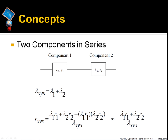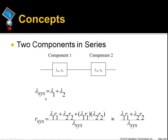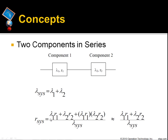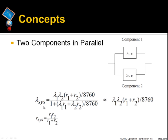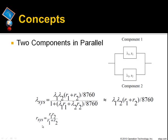For two components in series, the total failure rate, represented by lambda of the system, is the sum of each component failure rate, and the total failure duration, R of the system, is calculated with the equation shown. For two components in parallel, the total failure rate, lambda of the system, and total failure duration, R of the system, are calculated by the equations shown.